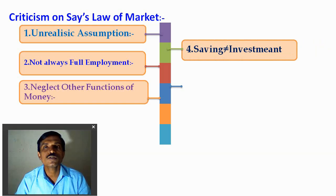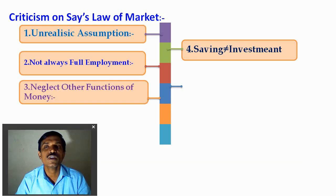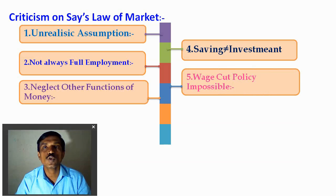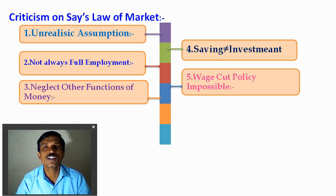Saving and investment are not equal to each other because the saving group and the investment group are different. There is a difference between saving and investment. Saving depends not only on the rate of interest but also on the income of the person — higher income means higher saving. Investment also depends on the rate of interest and the marginal efficiency of capital. So there is a different group of savers and investors, meaning saving does not always equal investment. The wage cut policy is impractical because workers today do not accept cuts to their wages — trade unions are very strong these days and do not agree with wage rate reductions. So the wage rate reduction policy is impossible.